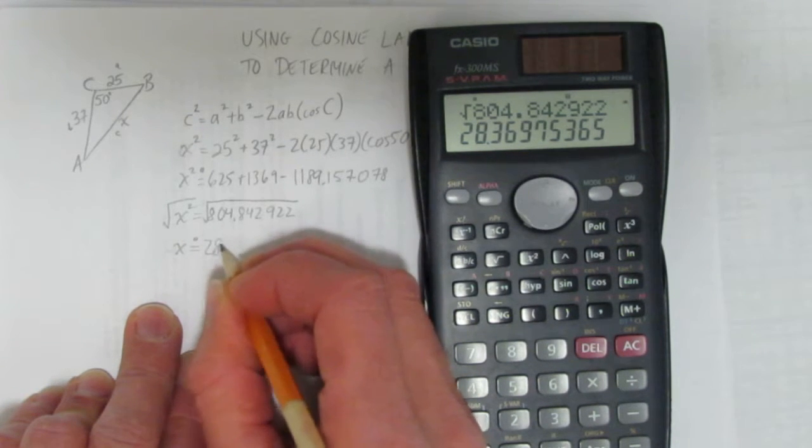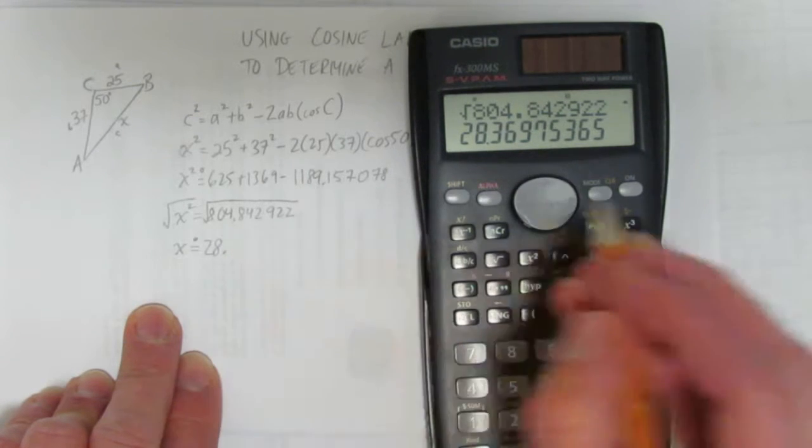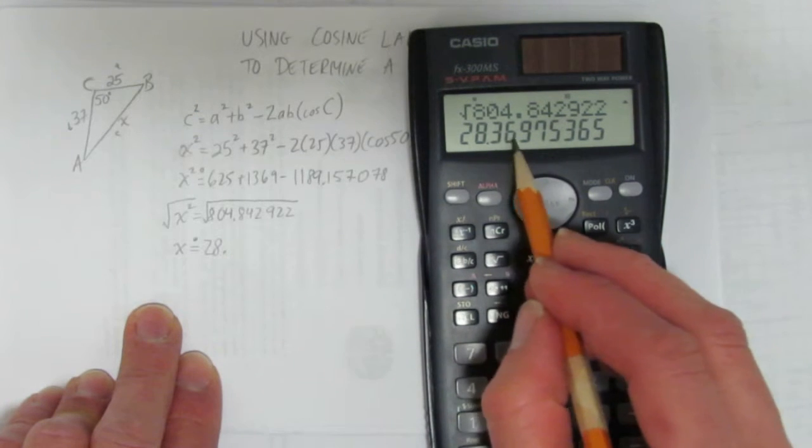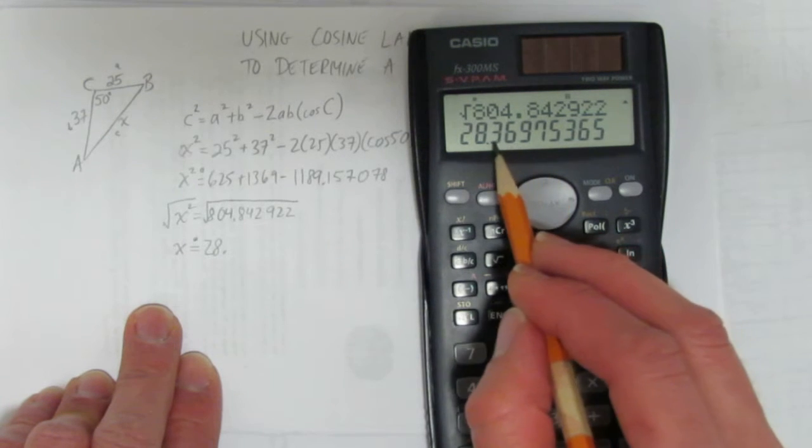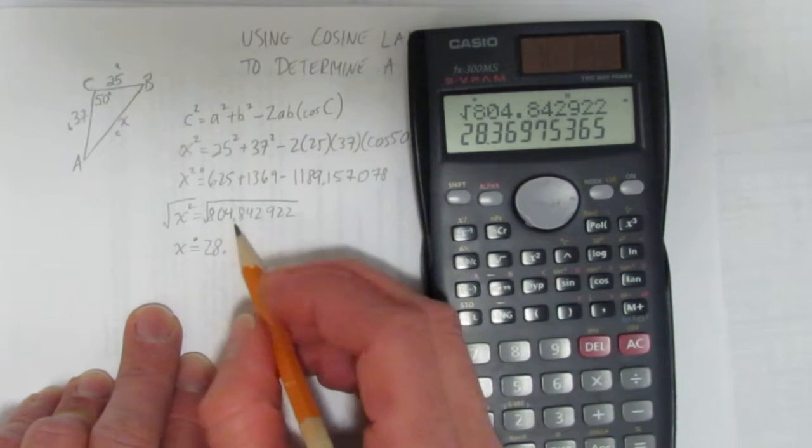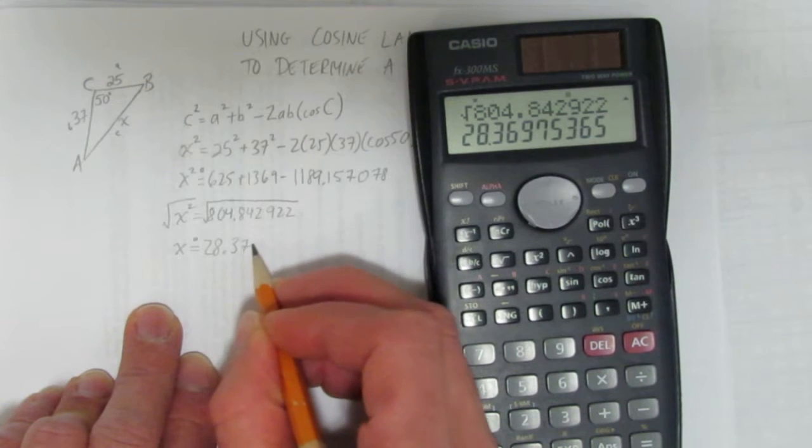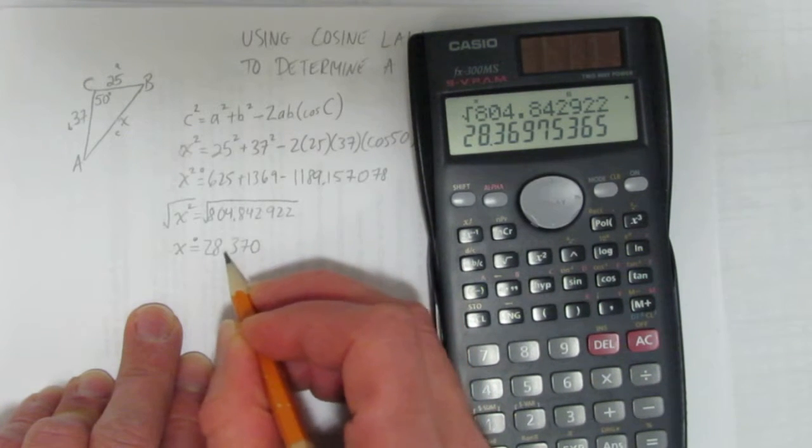So it's approximately 28.36 - oh, this is interesting - 369. I want three decimals, but this 7 means round up, so I've got to round 0.369 up, which rounds to 0.370. Need that zero there to show three decimals.